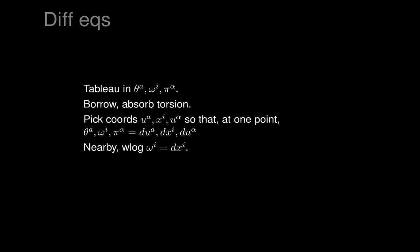Nearby, we can still assume the omegas are in fact dx's. Why? Because the omegas really only need to satisfy a linear independence condition in order to ensure we're still absorbing torsion and borrowing correctly. If they're arranged to be dx_i's at one point, those same dx_i's will remain linearly independent nearby and will still work as omegas. So we can just assume the omegas are exactly dx's.